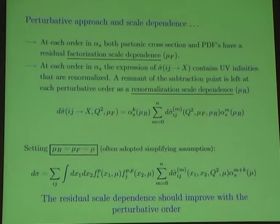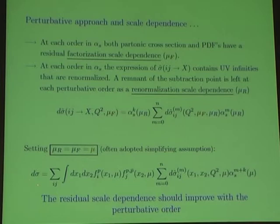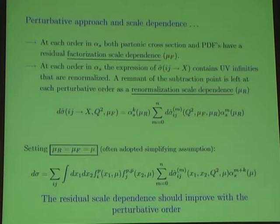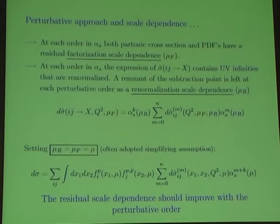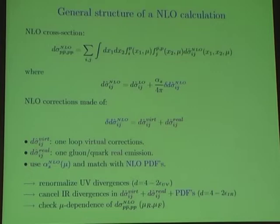If we set the two scales equal and call this globally the scale mu, the scale dependence of our physical prediction looks like what we have on the blackboard, with dependences in the parton distribution functions, in the cross-section itself, and in sigma-hat at each perturbative order. The scale dependence should be zero when summed to all orders, since the total cross-section is a physical observable. That's one of the main reasons to go to higher perturbative order — to improve the scale dependence of the prediction.